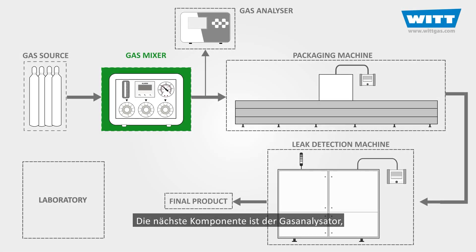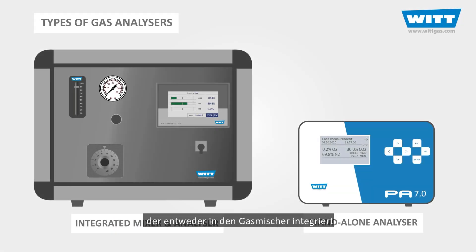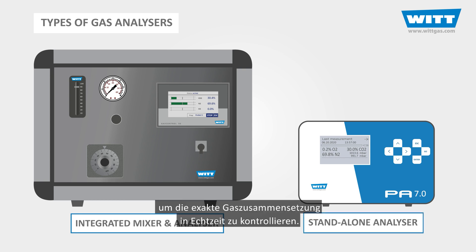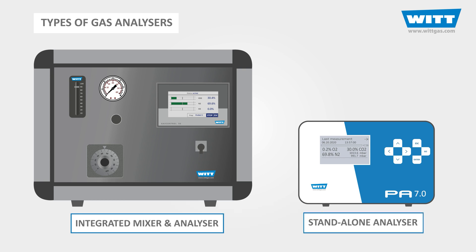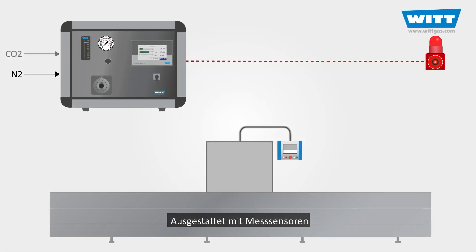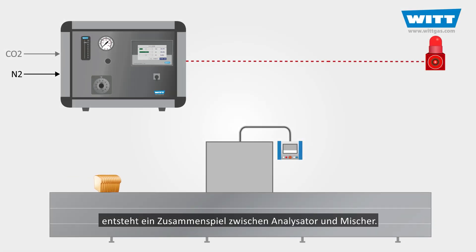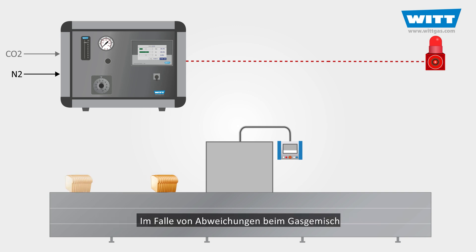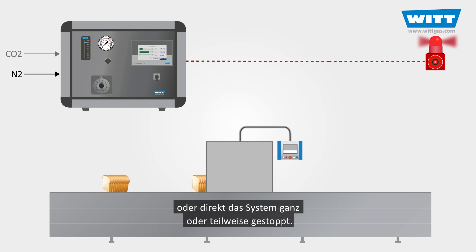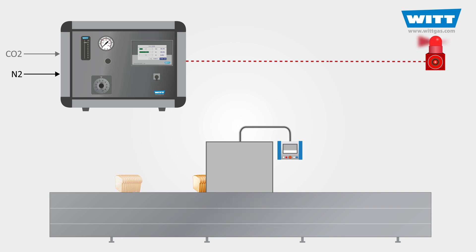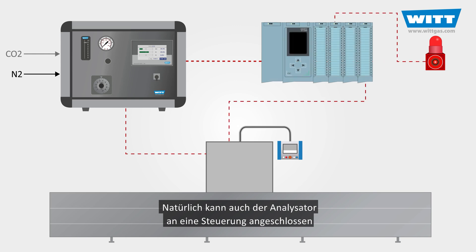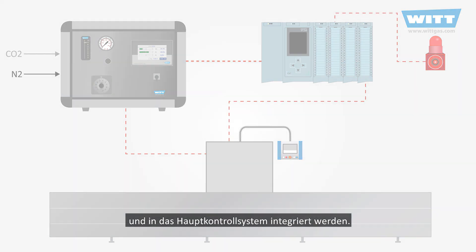The next component is the gas analyzer, which could be integrated into the gas mixer, or could be a standalone unit for monitoring the exact real-time percentages of the gases. Equipped with measurement sensors, the analyzer will work in conjunction with the mixer, and in case of any anomalies in the gas mixture, it will inform the operator by activating an alarm, or will directly shut down the whole or a specific part of the system. Of course, the analyzer can be connected to a PLC as well and be integrated into the main control system.